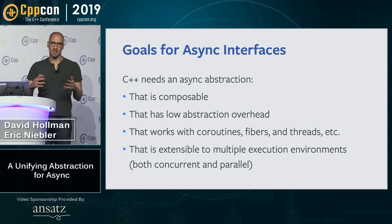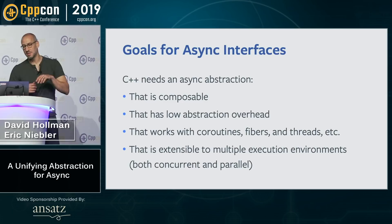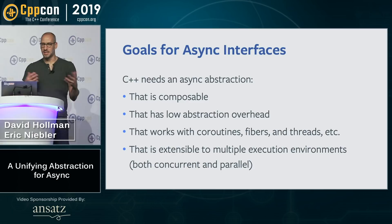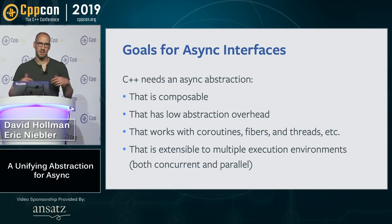This talk is about the committee's search to find the fundamental basis operations that will let us express asynchrony generically. The requirements for an async abstraction: it better be composable, have low abstraction overhead, work with coroutines, fibers, or threads, and be extensible to multiple execution environments—thread pools, GPUs, CPUs, parallel runtimes—covering concurrency and parallelism both.